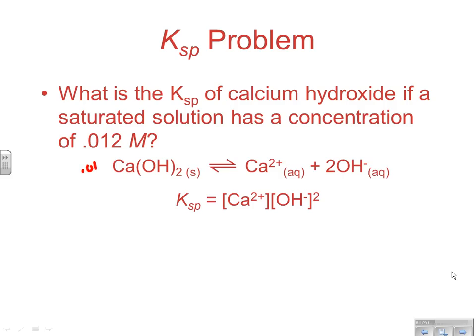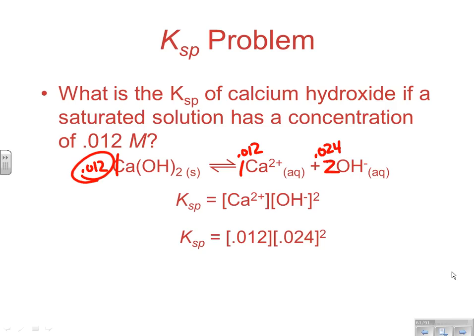If calcium hydroxide is 0.012 molar, there's one calcium hydroxide for every one calcium, so Ca²⁺ is also 0.012 molar at equilibrium. OH⁻ would be double that — 0.024 molar — because every calcium hydroxide gives two hydroxide ions. By stoichiometry, one formula unit gives one Ca²⁺ and two OH⁻. So you plug in: 0.012 times 0.024 squared. The Ksp is 6.9 × 10⁻⁶.